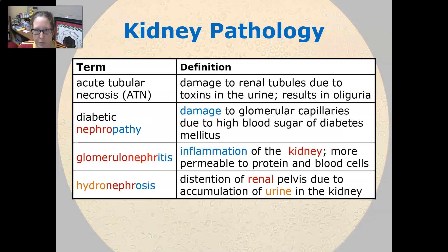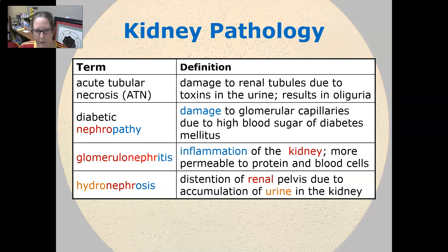Starting with the kidney: acute tubular necrosis is damage to the renal tubules due to toxins in the urine, and it results in oliguria, meaning the kidneys are only producing a little bit of urine. Diabetic nephropathy is damage to the glomerular capillaries due to the high blood sugar of diabetes, and it causes kidney damage.